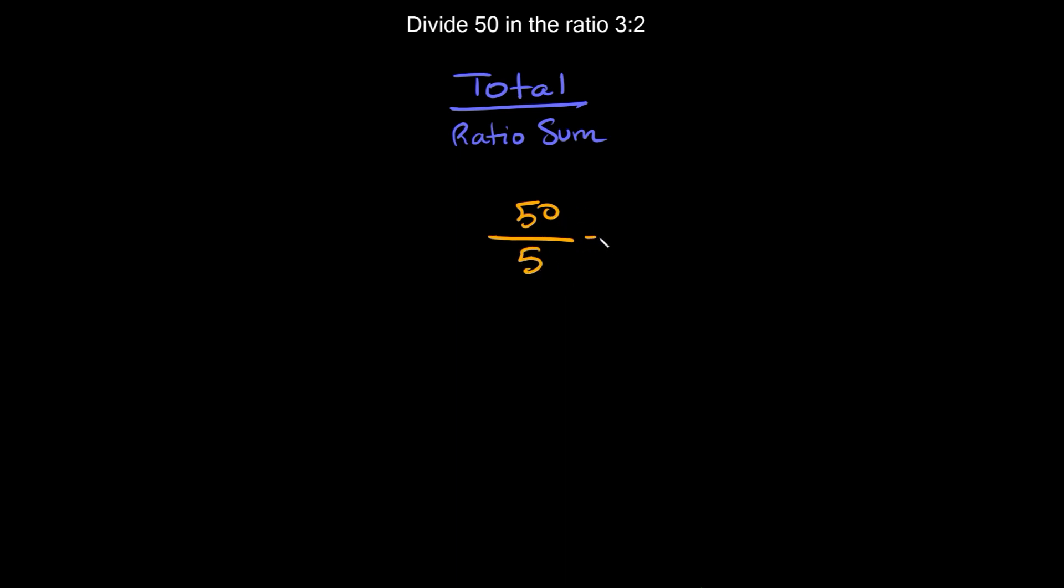50 divided by 5 is equal to 10. Now this number right here represents one part. So the only thing we have to do with this number is multiply it by the original ratio.